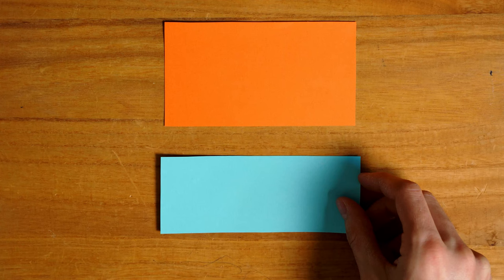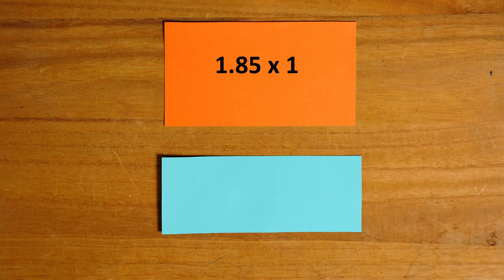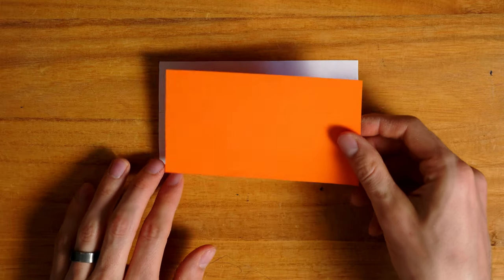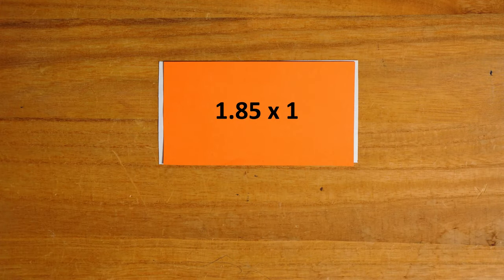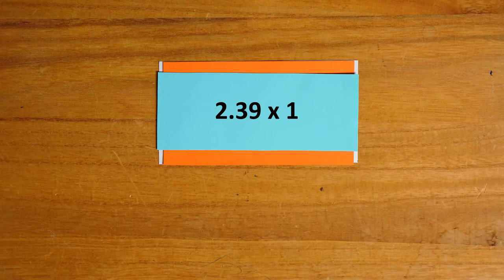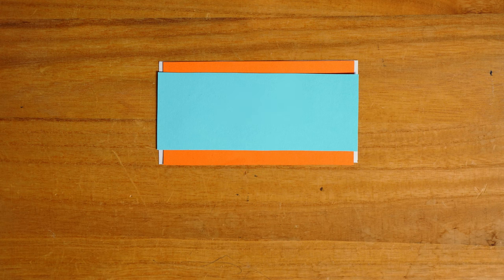The 4K TCI format was created because movies have two aspect ratios: 1.85 by 1, also known as flat, and 2.39 by 1, also known as scope. 4K TCI is meant to be either cropped slightly on the sides to 1.85 by 1, giving it a resolution of 3996 by 2160, or cropped on the top and bottom to 2.39 by 1, giving it a resolution of 4096 by 1716. As you can see, 4K TCI falls in between these two aspect ratios, making it a compromise between them.